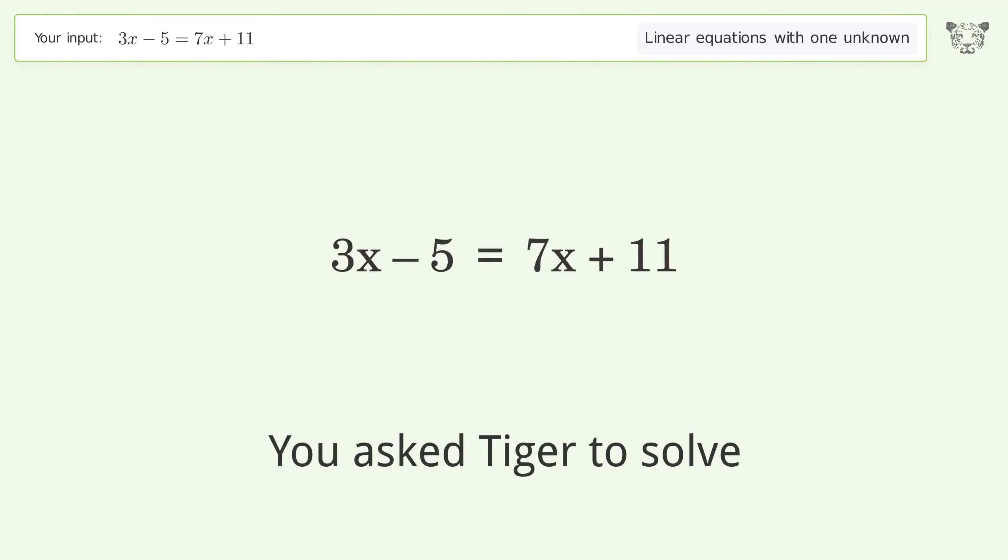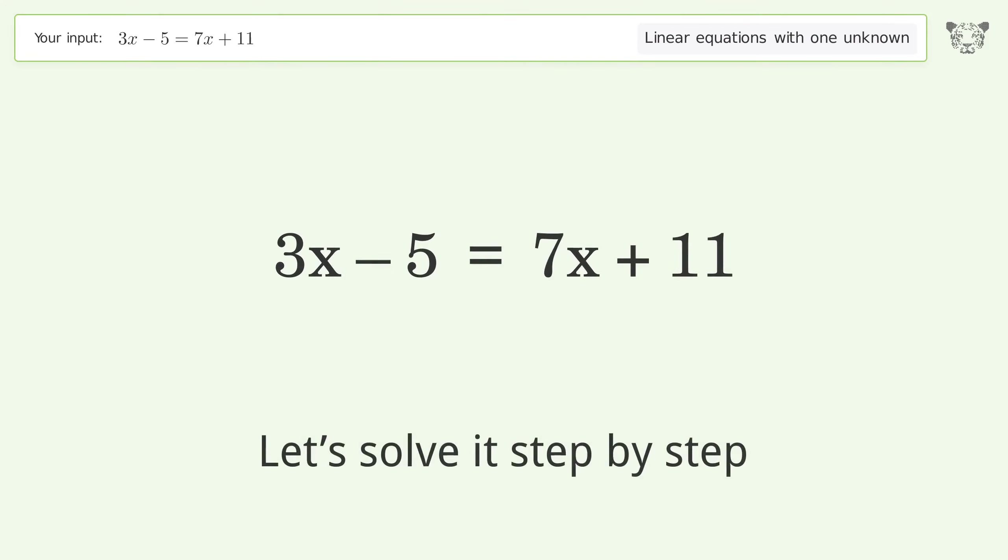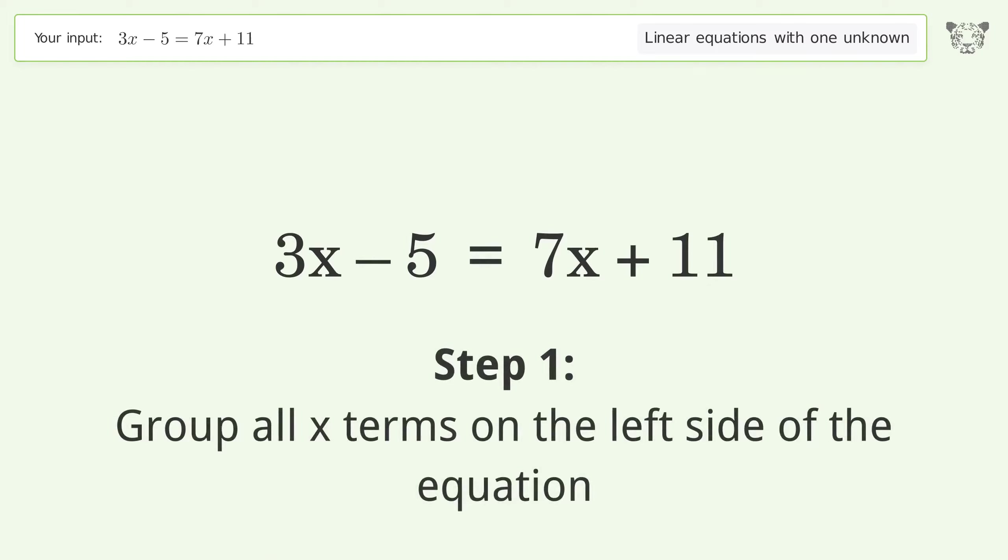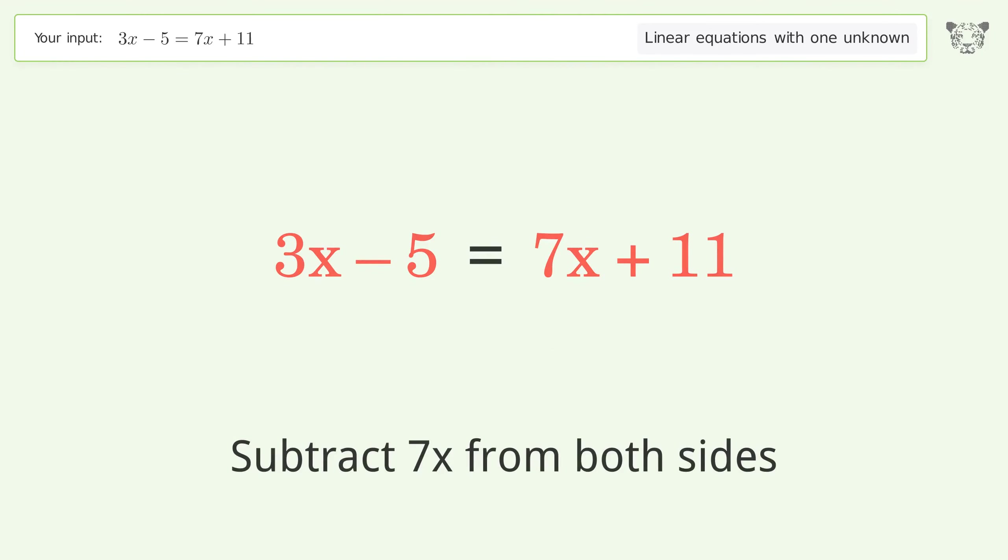You asked Tiger to solve this linear equation with one unknown. The final result is x equals negative 4. Let's solve it step by step. Group all x terms on the left side of the equation. Subtract 7x from both sides.